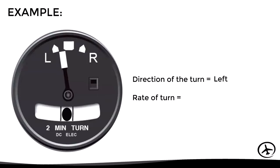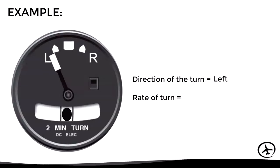If the needle moves to a position short of the mark, the aircraft is still turning to the left but at a slower rate — less than three degrees per second. On the other hand, if the needle moves beyond the mark, it indicates a turn to the left with a rate of turn of more than three degrees per second.